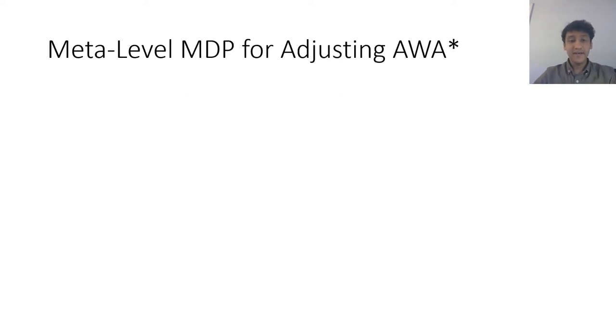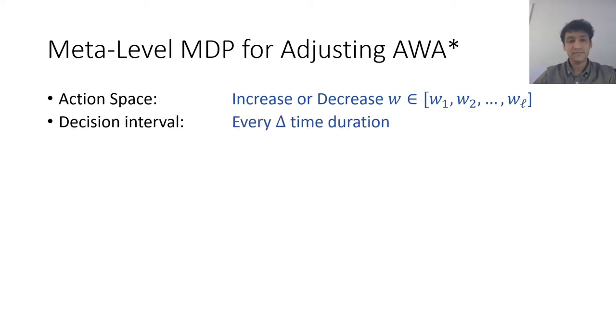Now, let us define the meta level MDP for adjusting Anytime Weighted A star. The action space is to either decrease or increase the weight from a predetermined set. That set could be for example 1, 2, 3, 4, and 5. That would mean that the increasing action would increment the weight by 1. Between every two decisions, the Anytime algorithm executes for delta time duration.